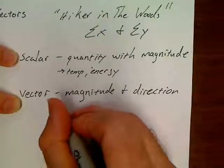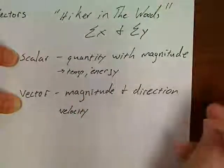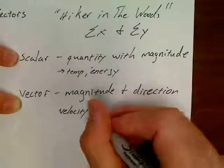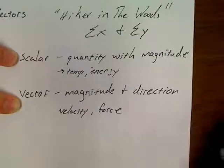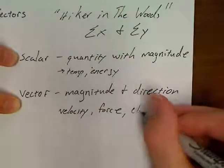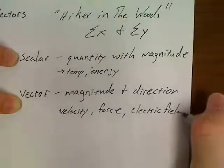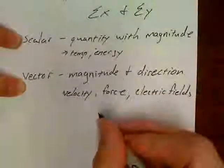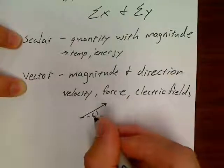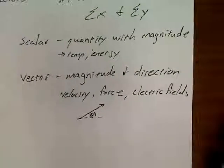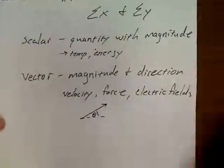Vectors, on the other hand, are things like velocity. You can be going 20 meters per second north. Force is a vector. Electric fields. Basically, anything that can be drawn like this is a vector. So there's your difference between what a vector and a scalar is.